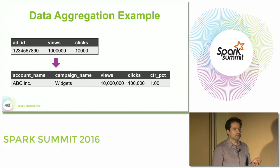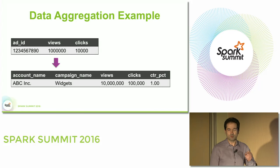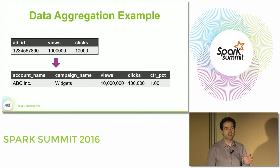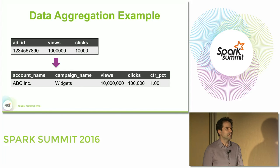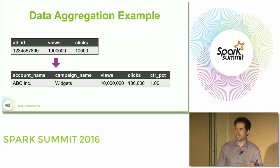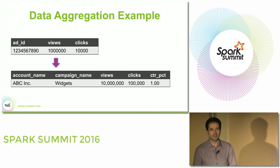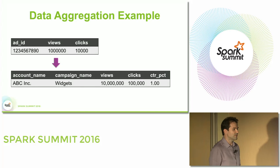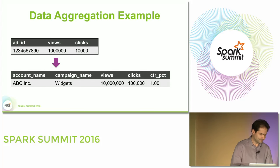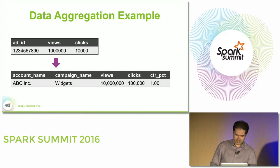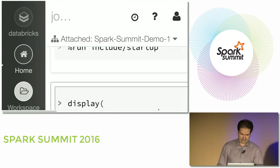Because a lot of the interactive exploration is done in Spark, let's take probably one of the simplest possible examples. Say we have a table of views and clicks for each one of our ads over some period of time, and we want to turn this into a table by account and campaign. Maybe we want to add the click-through rate — the rate at which the ads are being clicked. Couldn't be simpler — so how do you do that?